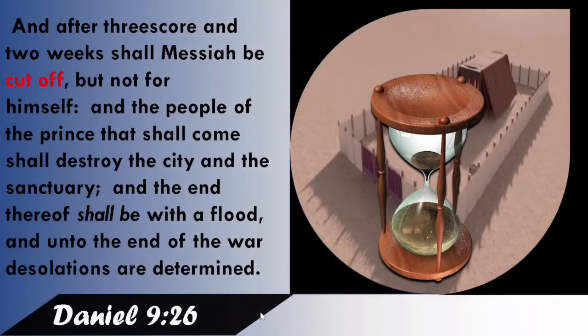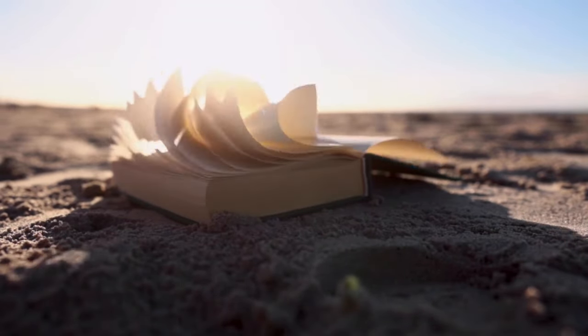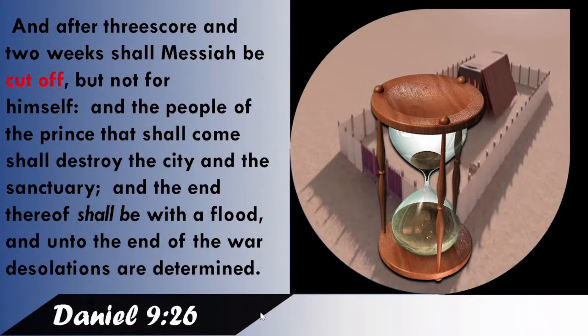We last counted from BC 457 to AD 27, which was the time where we see the Messiah coming in. And in Daniel chapter 9 verse 26, the Bible still continues to tell us that after threescore and two weeks shall Messiah be cut off, but not for himself, and the people of the prince that shall come shall destroy the city and the sanctuary, and the end thereof shall be with a flood. And unto the end of the war, desolations are determined.